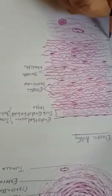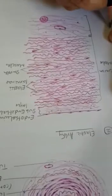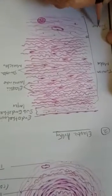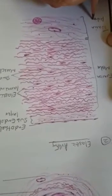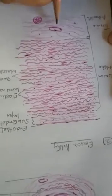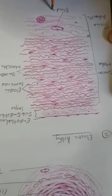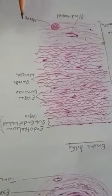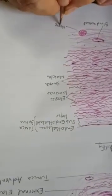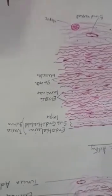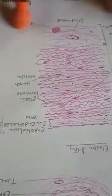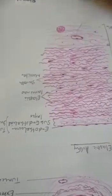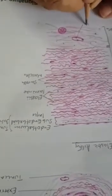And this is tunica adventitia. Blood vessels and nerve here, or you can write down vasa vasorum.